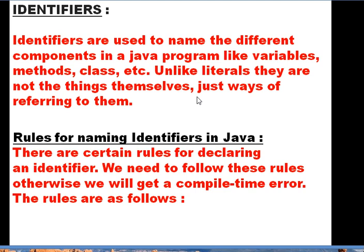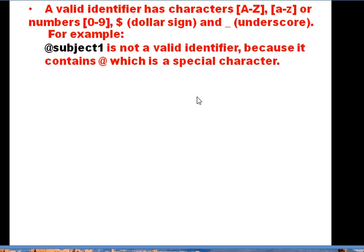To name identifiers in Java, we must follow certain rules; otherwise we get a compile-time (syntax) error. Rule number one: a valid identifier may contain uppercase A–Z, lowercase a–z, or digits 0–9. Only two special characters are allowed — a dollar sign ($) and an underscore (_). No other special characters are allowed. For example, '@subject1' is not a valid identifier because it contains the '@' symbol.